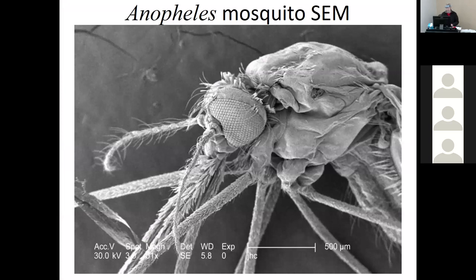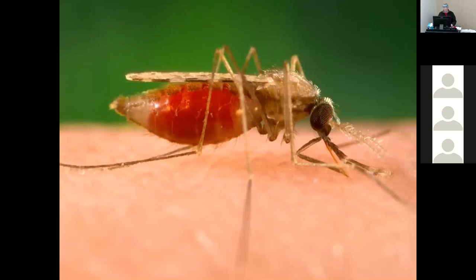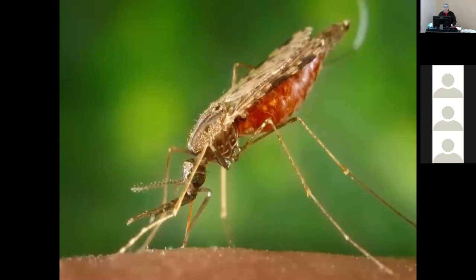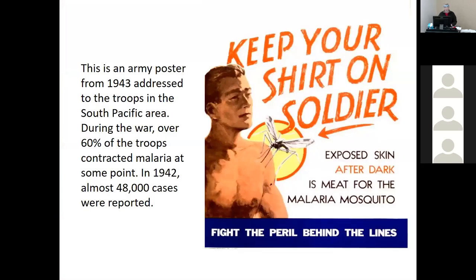Here's a scanning electron micrograph of the mosquito — in case you've never seen one. This is from 1943, more of the South Pacific area. I promise I won't spend our whole time on history — we'll get to the real stuff here in a little bit, but I think it's good to hopefully learn from these.